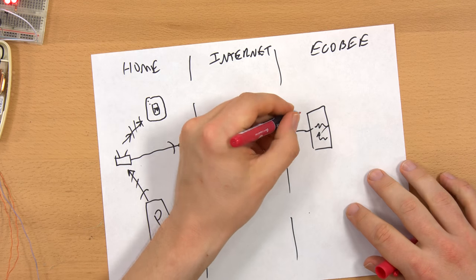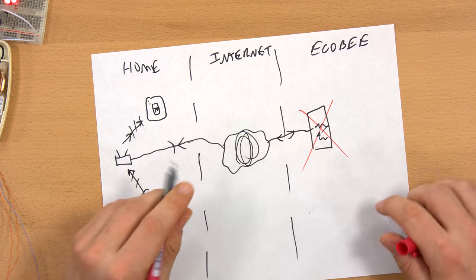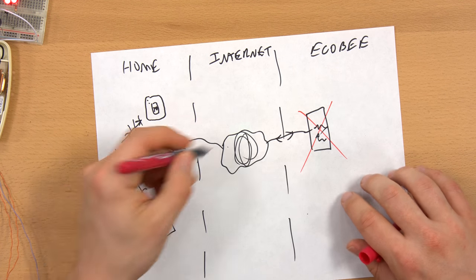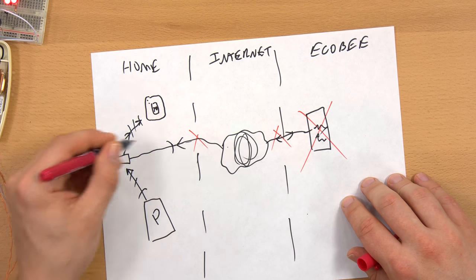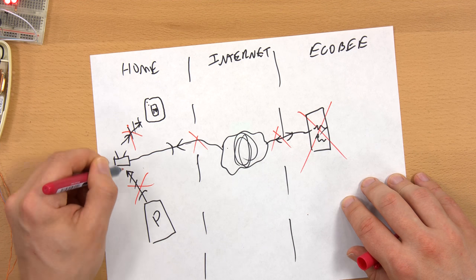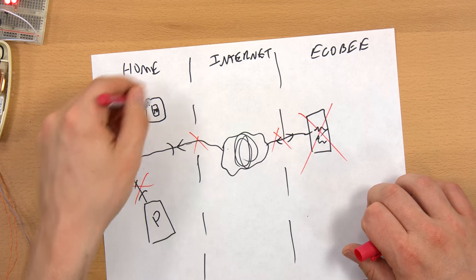If this server goes down, if this stops existing or there's some kind of other problem, then this is pointless, this is pointless, this is pointless, and this is pointless. You lose all communication with your Ecobee.